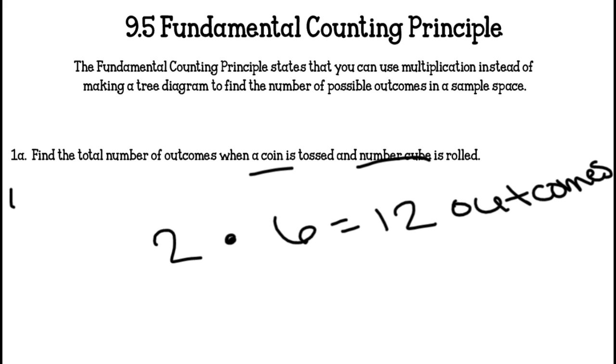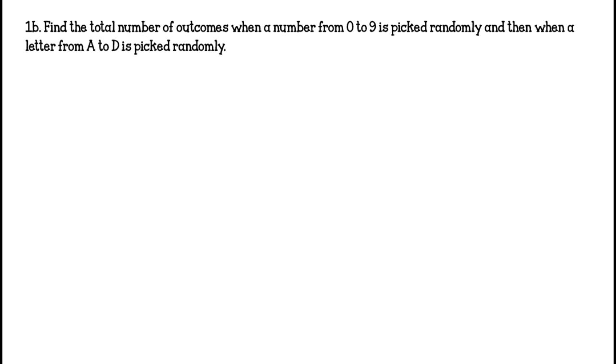So if you think about it that's heads 1, heads 2, tail 1, tail 2, and so on. And the total number of outcomes when a number from 0 to 9 is picked randomly and then a letter from A to D is picked randomly. So in the numbers 0 to 9 there are 10 numbers. In the letters A to D there are 4. So that is 40 outcomes that are possible.